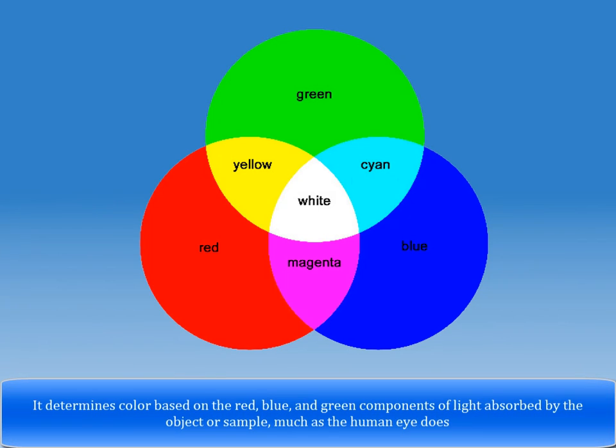It determines color based on the red, blue, and green components of light absorbed by the object or sample, much as the human eye does.